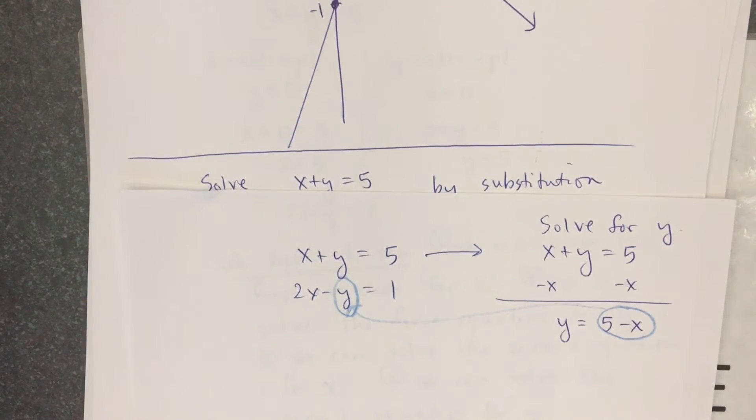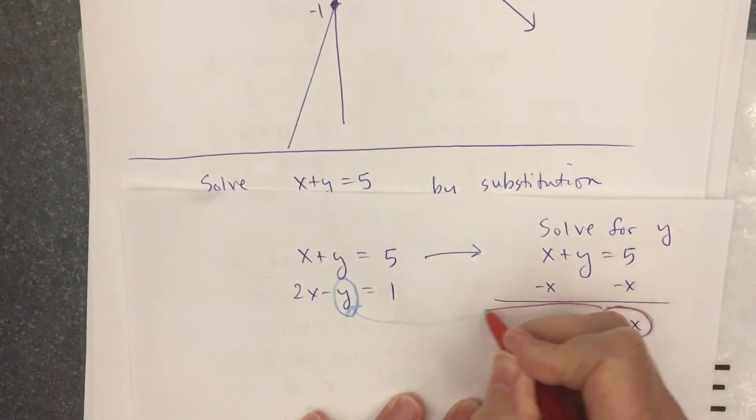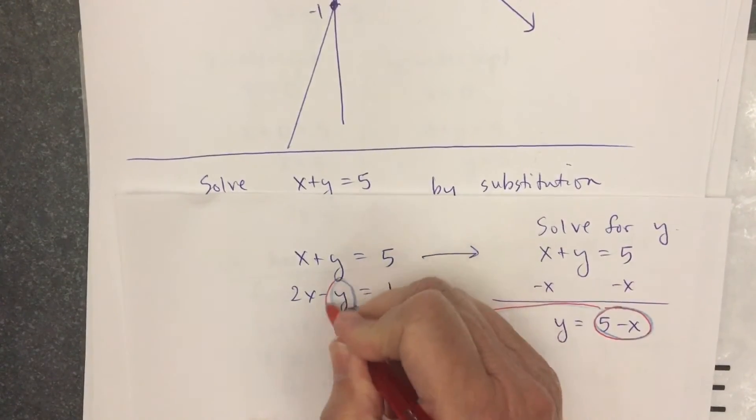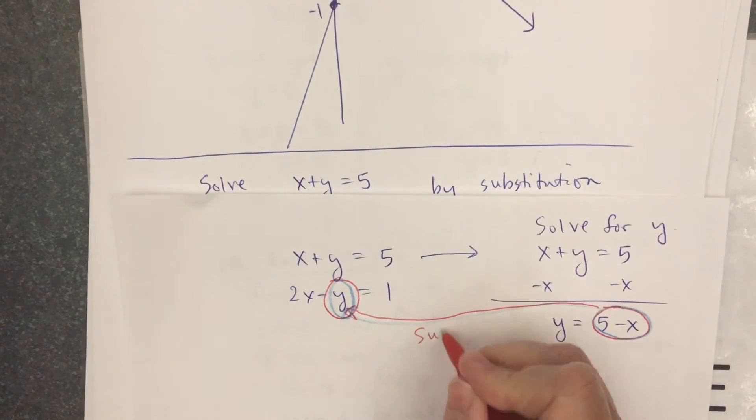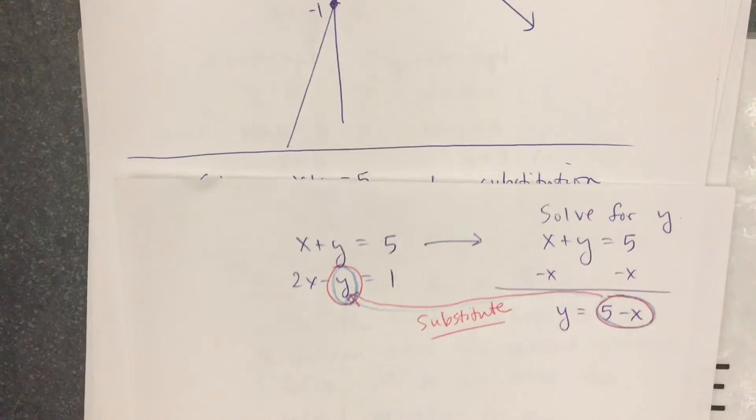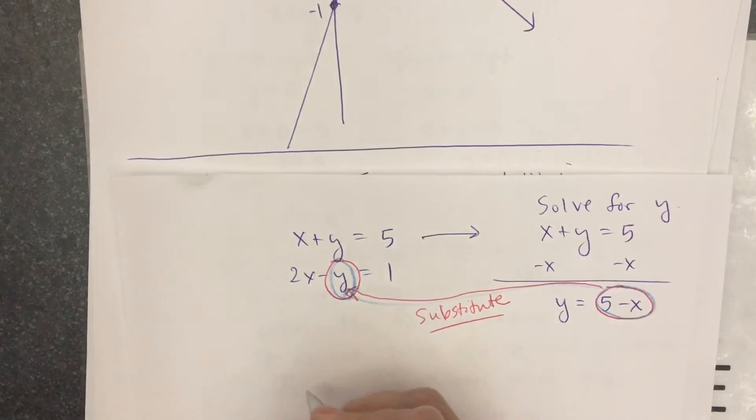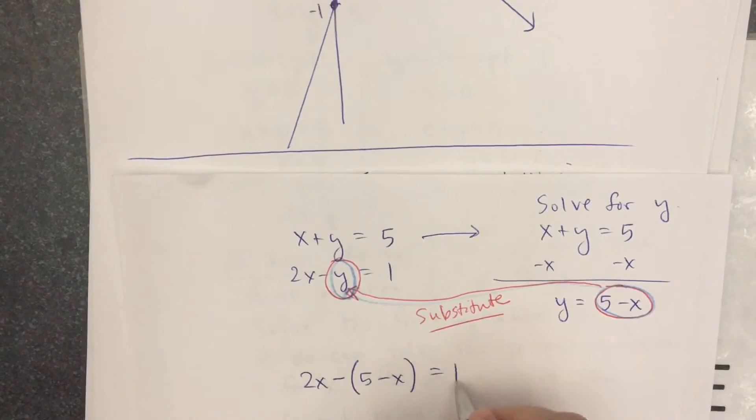That's the substitution step. I'm going to circle it in red. I think it will show up a little bit better. Write the word substitute. So when I do that, I'm going to have 2x minus, this one's going to be a little tricky here, because I got that minus sign in front of the y. Put parentheses, 5 minus x equals 1.